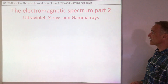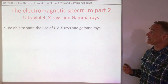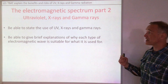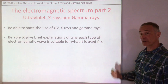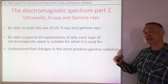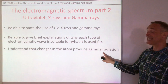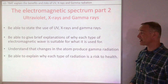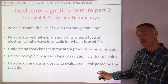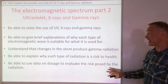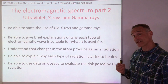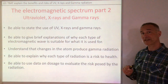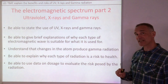So in this lesson we've looked at being able to state the use of UV, x-rays and gamma rays. We've given brief explanations of why each type of electromagnetic wave is suitable for what it's used for. We've looked at how changes in the atom — electrons falling down energy levels — emit gamma radiation. We've been able to explain why each type of radiation is a risk to health because of ionisation. And we've looked at how we measure dose and how to use data to evaluate the risk posed by radiation. That's the last lesson on waves for combined science. For triple science there are two more lessons: one on lenses and one on black body radiation.